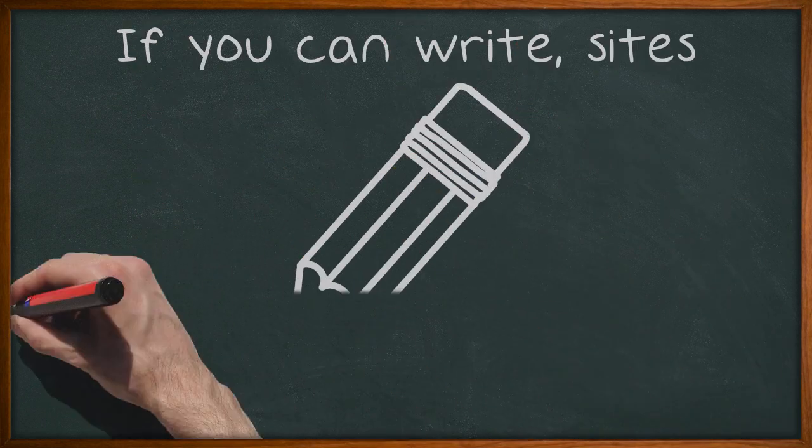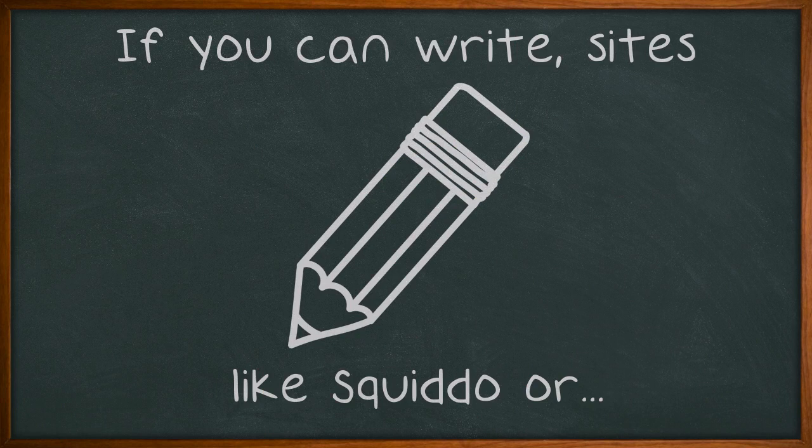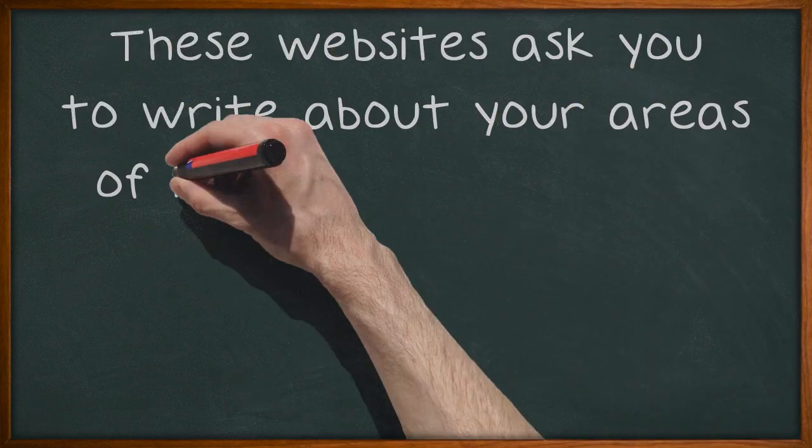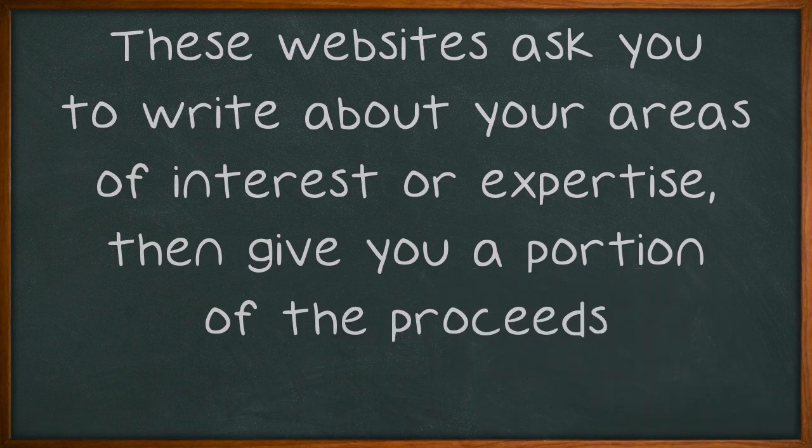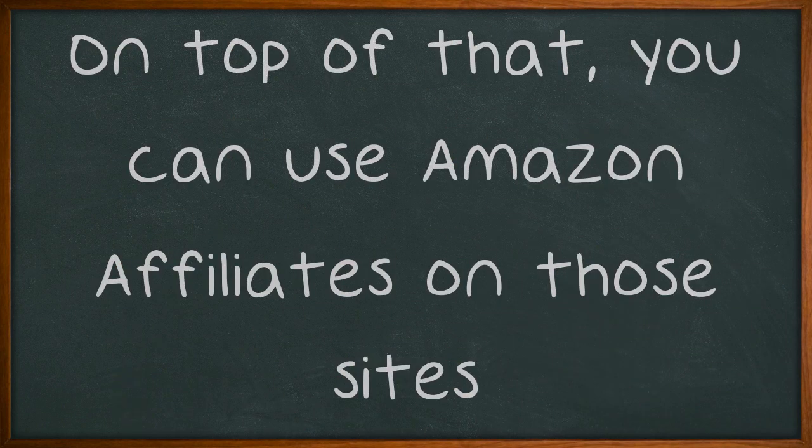If you can write, sites like Squido or InfoBarrel may be helpful to you. These websites ask you to write about your areas of interest or expertise, then give you a portion of the proceeds. On top of that, you can use Amazon affiliates on those sites.